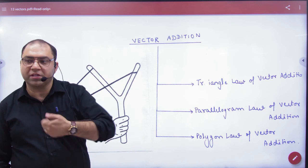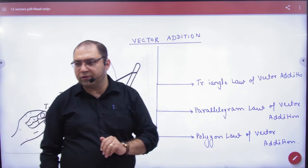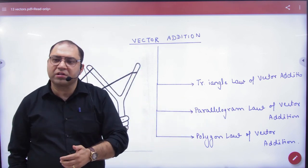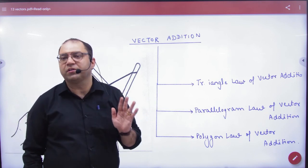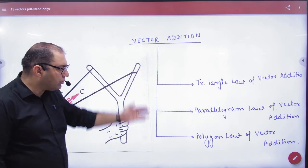And if it is more than two vectors, then polygon law of vector addition. These all the laws work for what to do, to add all the laws. So vector addition from these laws.